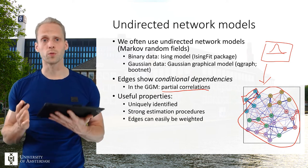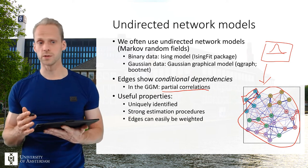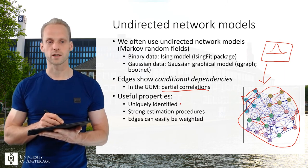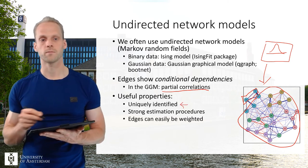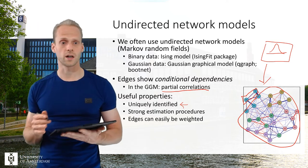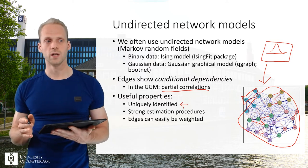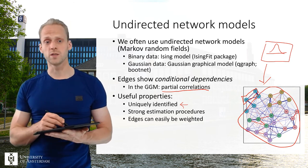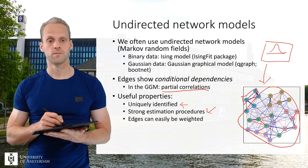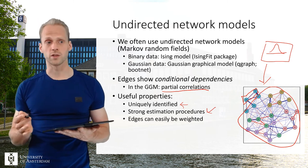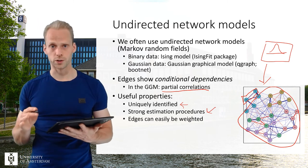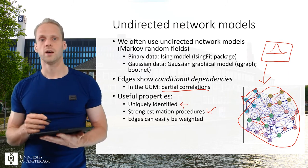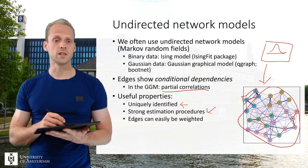There are some really useful properties to undirected network models. For example, you don't have this problem of identification. These are actually uniquely identified, so that means that there are no two equivalent models unless you start introducing latent variables. They have very powerful estimation procedures because of this as well. Because you have this unique identification, you can do very easy model search strategies where you add and remove edges until you get an optimal fit. And you can very easily weight the edges.